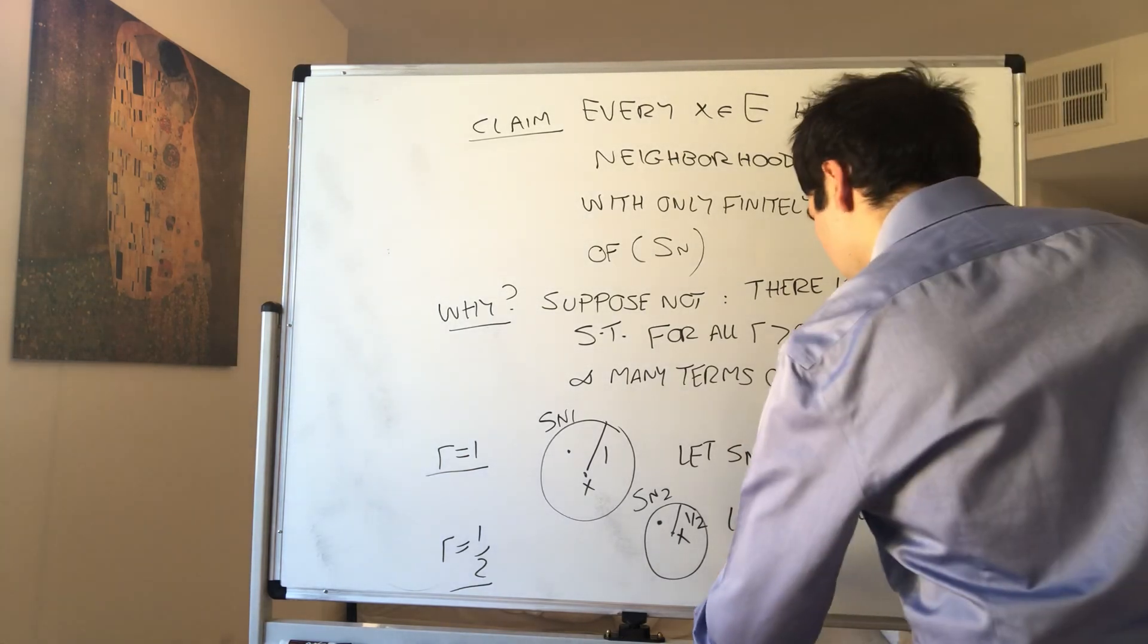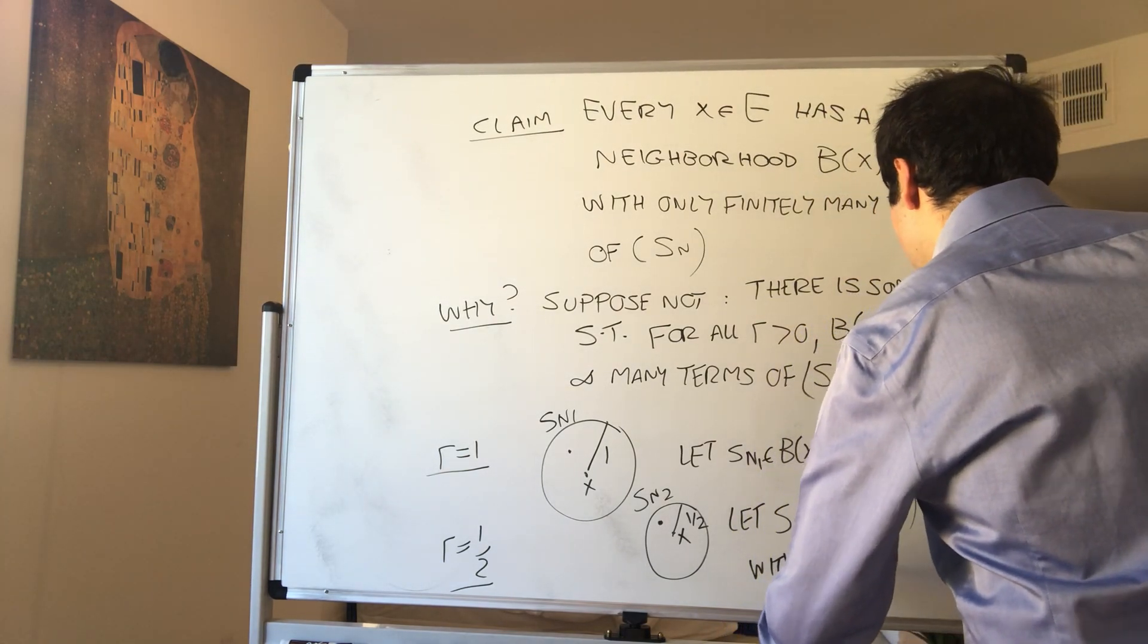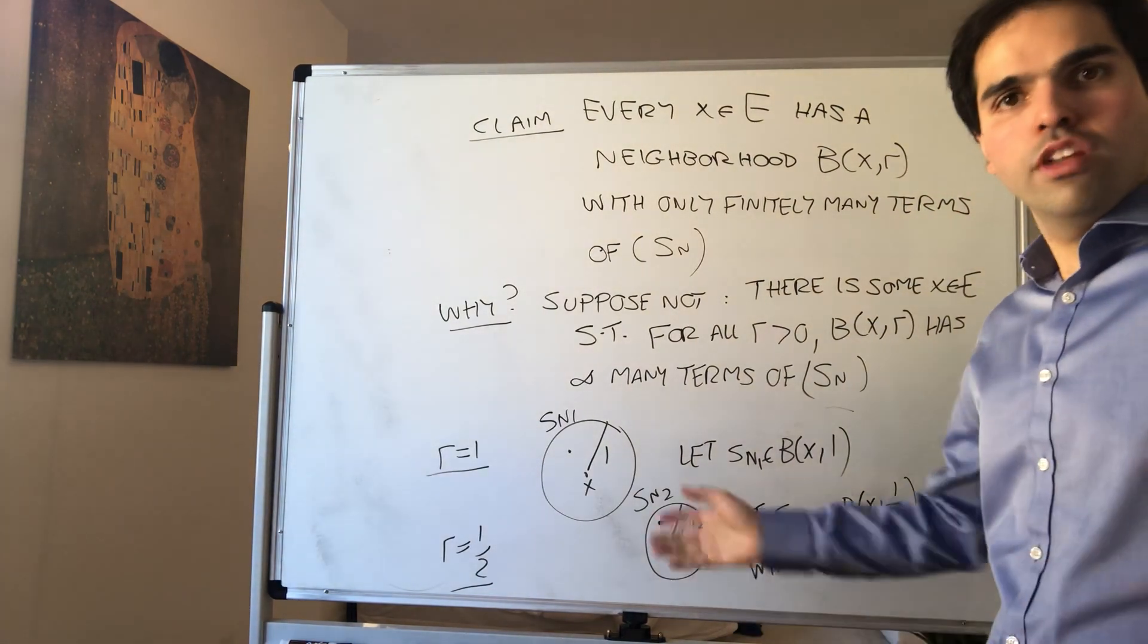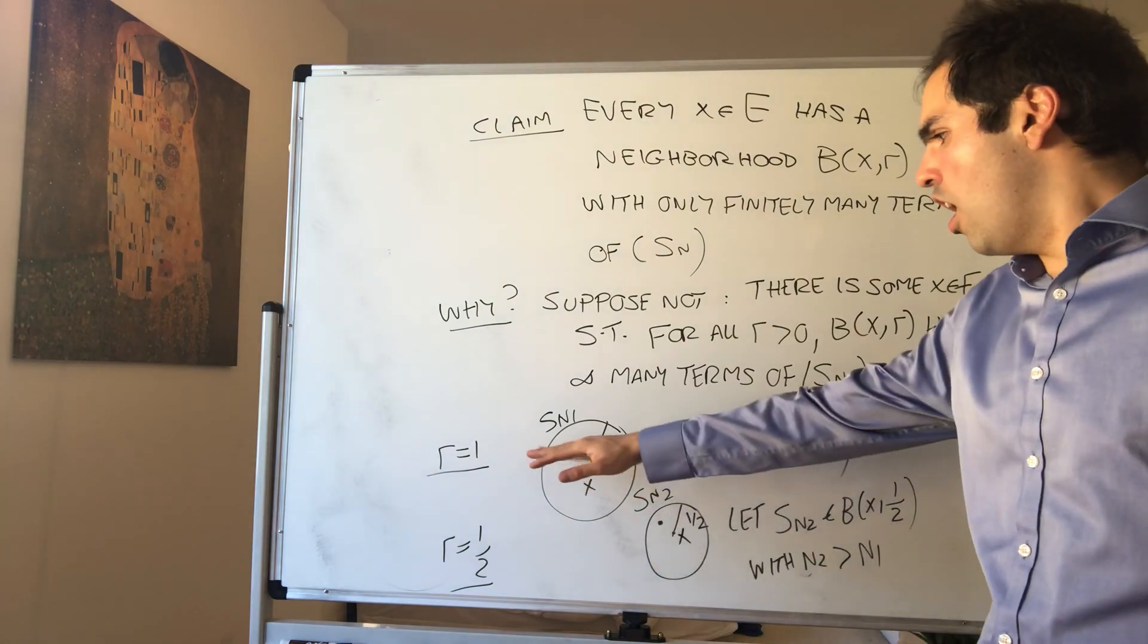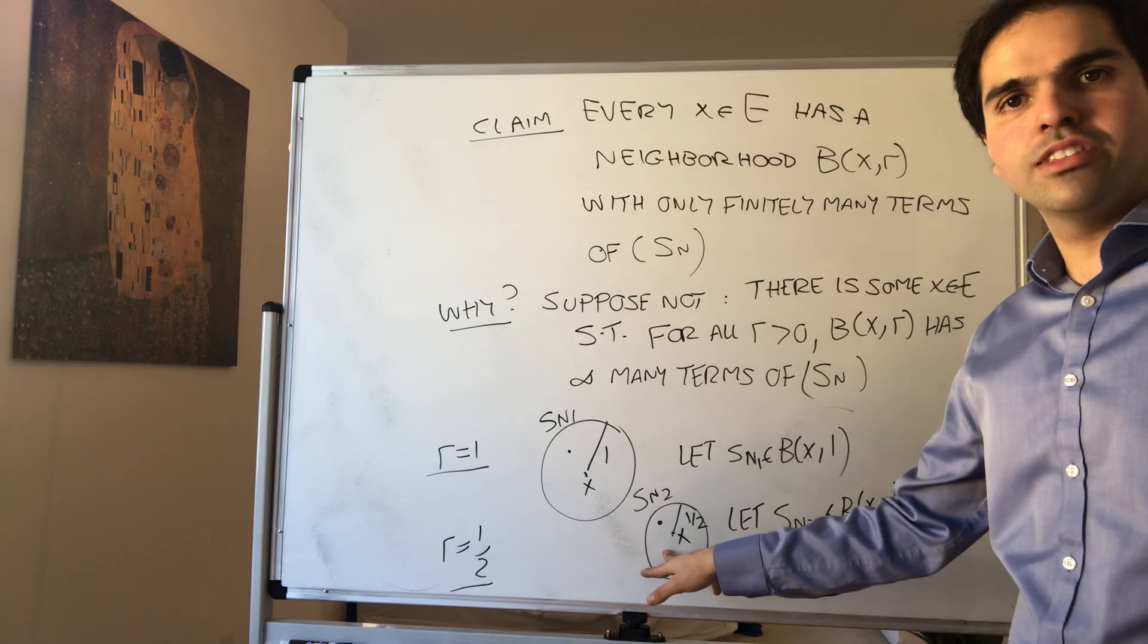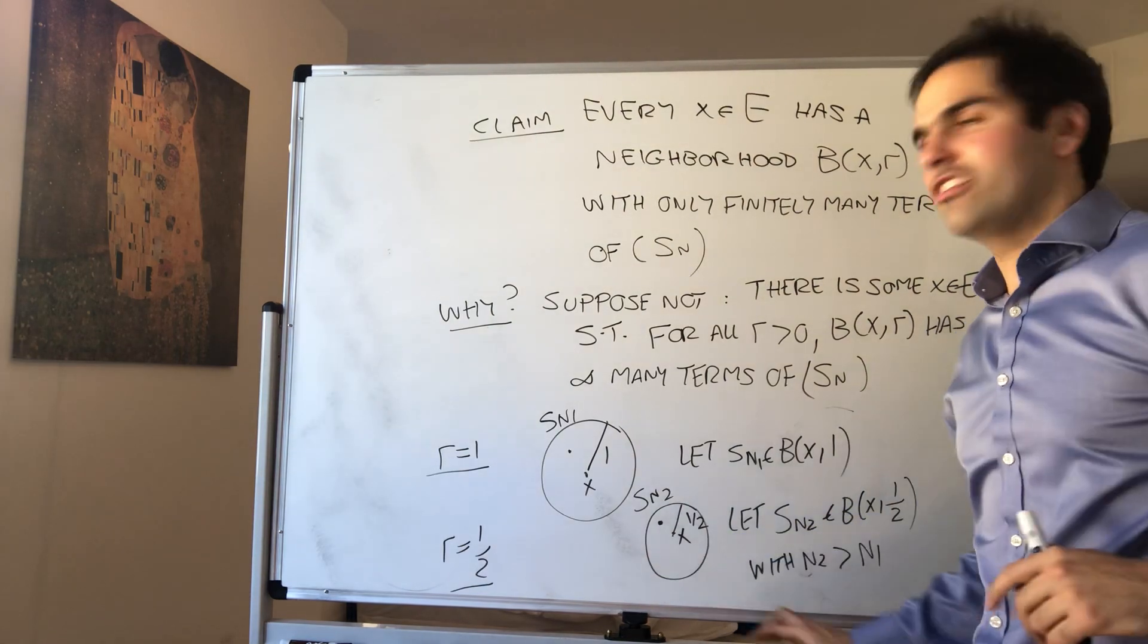So with n2 is bigger than n1. And we can do this because there are only finitely many terms up to Sn1, so since there are infinitely many terms in that ball, just pick one that's after that.